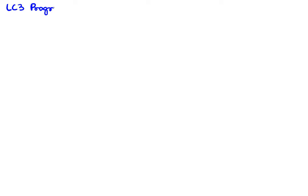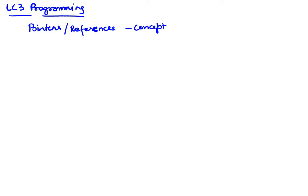This is part of a series of videos on LC3 programming. In this video I will focus on the notion of a pointer. Pointers are also called references — this is a general programming concept. We will see how it's implemented; the implementation of this concept is done using the notion of an address. Let's take a simple program and see if we can understand what we mean by the concept of a pointer or a reference.